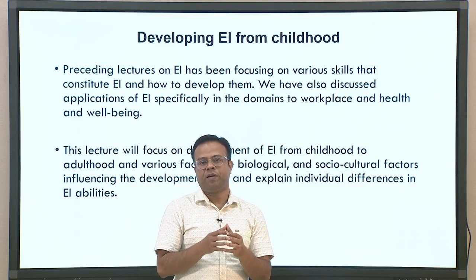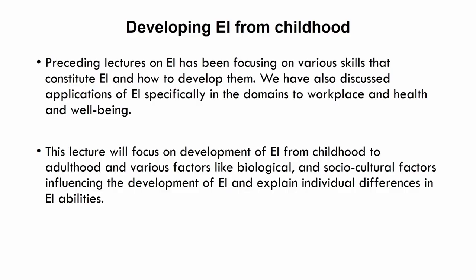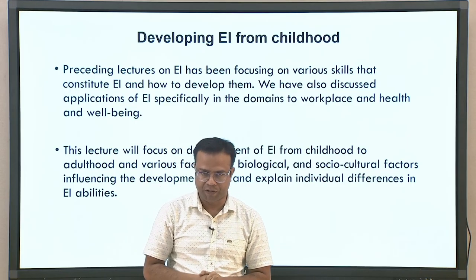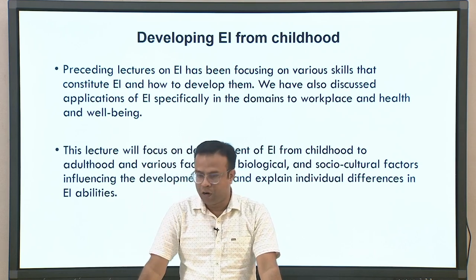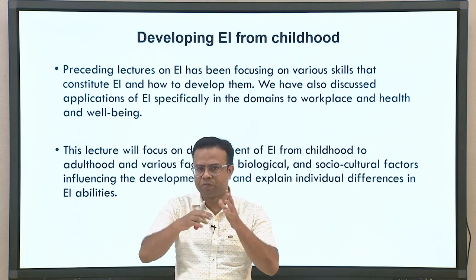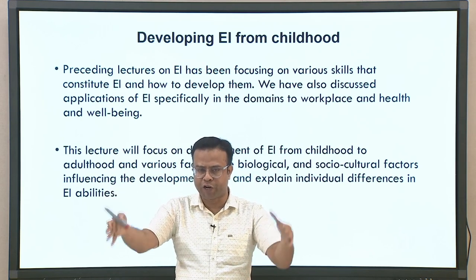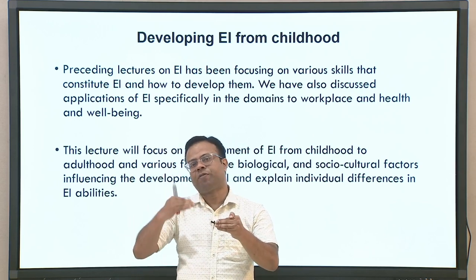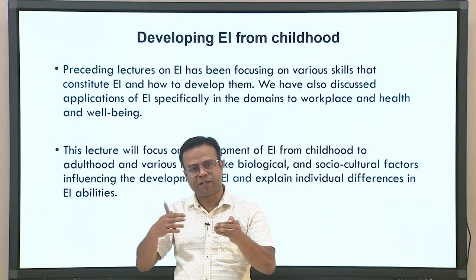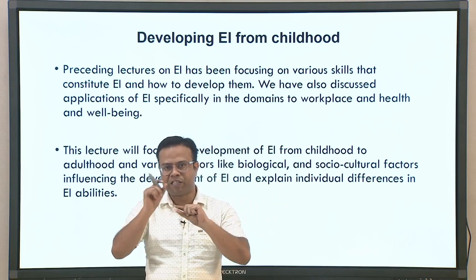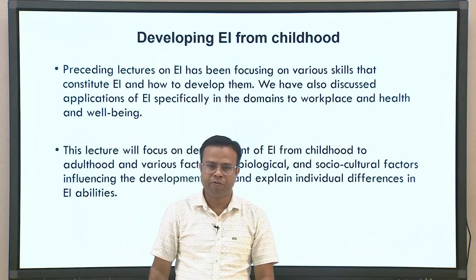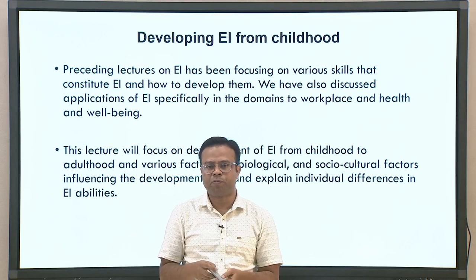When we talk about developing emotional intelligence — how it develops as a child grows, and the different factors that influence the development of emotional intelligence and other competencies at different stages of life — we will be looking at those aspects. In preceding lectures we focused on various skills of emotional intelligence. We discussed theories and different skills one by one, and how those skills can be developed. In this lecture, our approach will be a little different, focusing on application and how EI develops from childhood to adulthood.